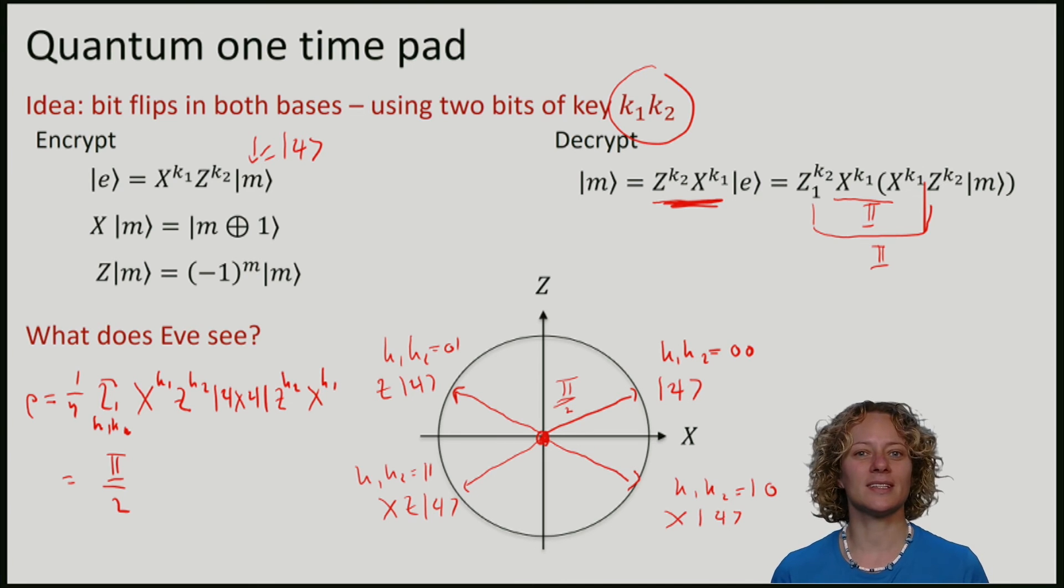Again, we see that the quantum one-time pad using this encryption has the property that independently of the initial qubit, the state that Eve has is maximally mixed and she cannot gain any information about psi. So we have now seen your first application of quantum cryptography, namely the quantum one-time pad.